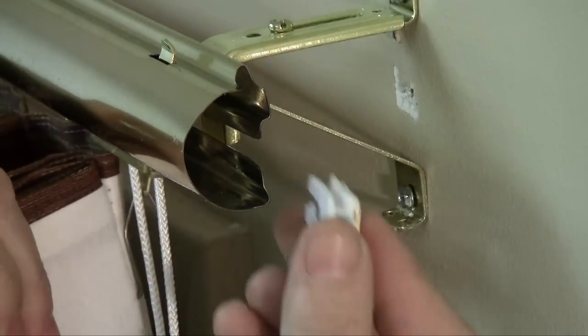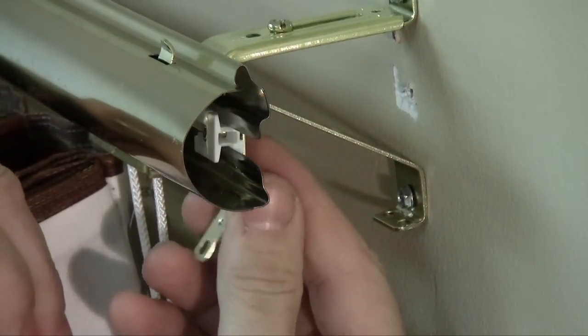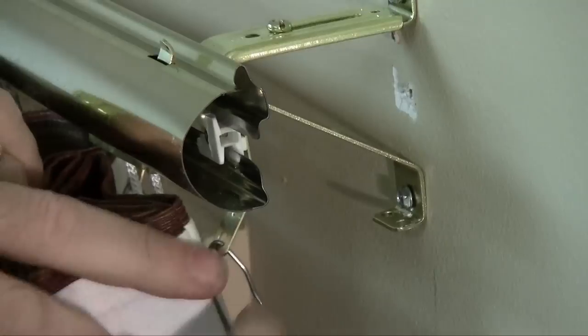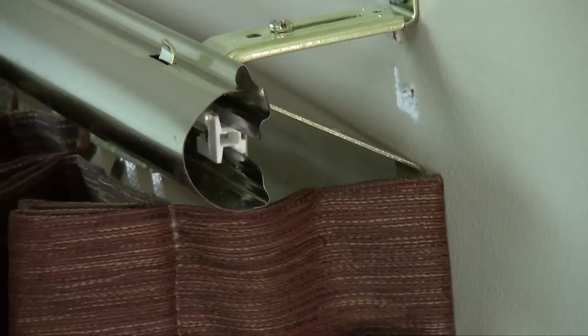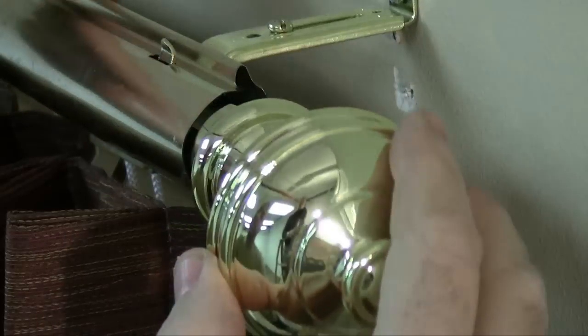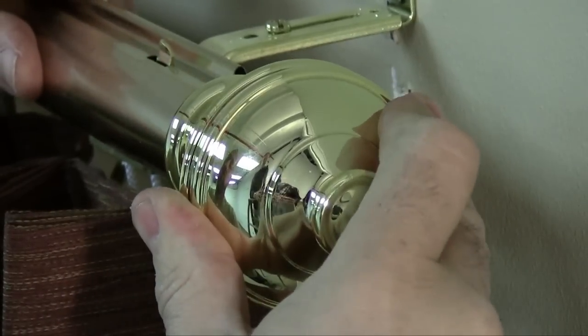When installing on a decorative traverse rod, the pins do not need to be moved because the drapery hangs below the rod. Simply add the last slide for the last pleat, hook the return pin into the bracket, and attach the finial.